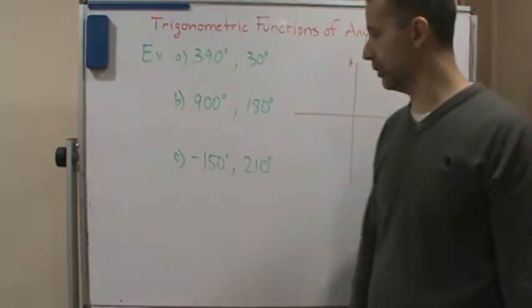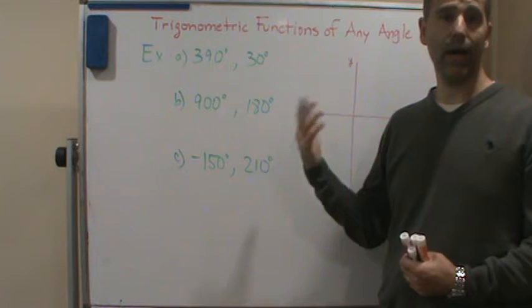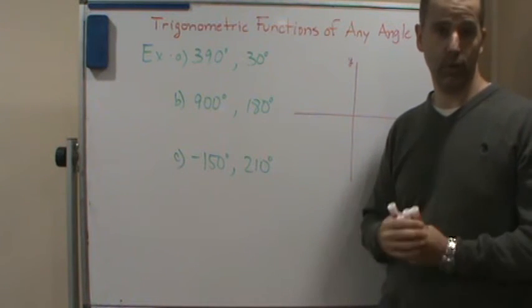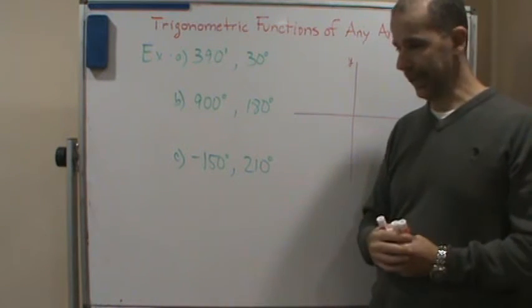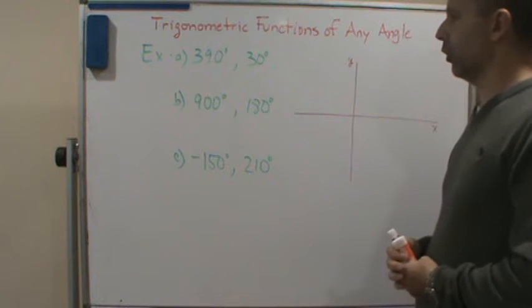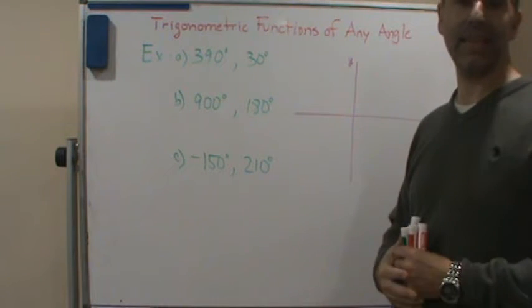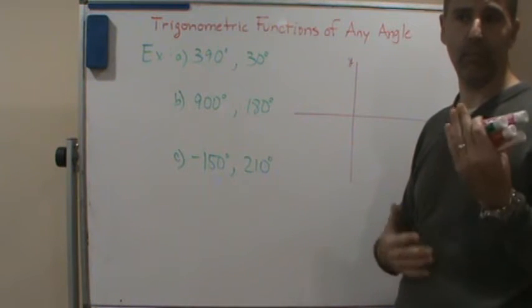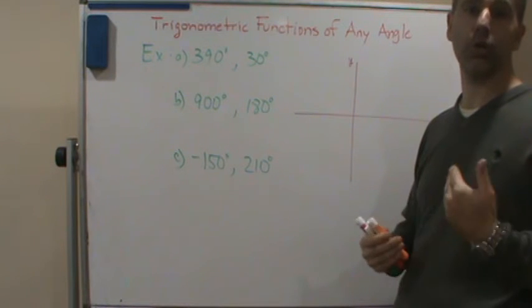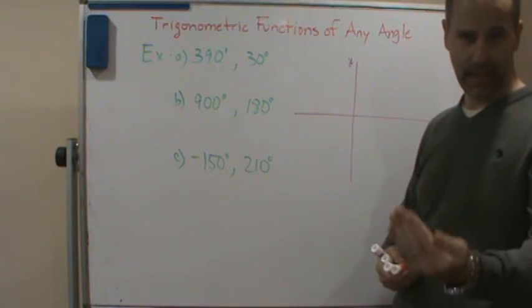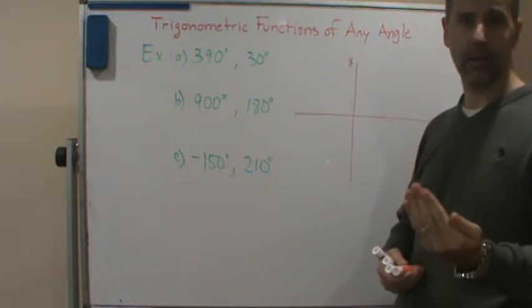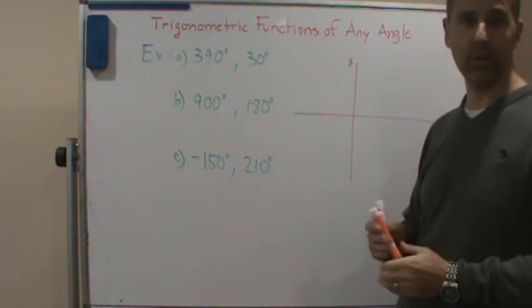Okay, so welcome back. Now we're going to do an example and I'm going to show you how these are coterminal sides or coterminal angles. So what does coterminal mean? It means that if we have multiple angles and they're coterminal, they end at the same spot in the Cartesian plane.